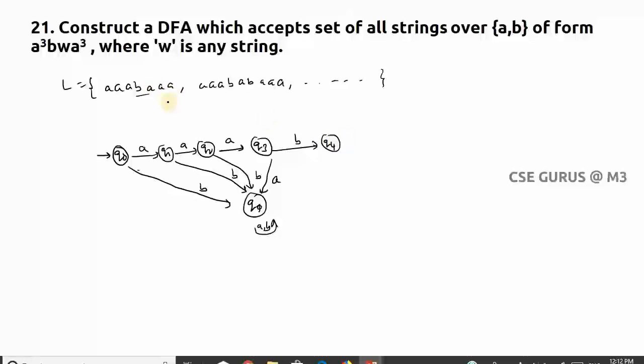From q4, I can have anything—any string. Let us suppose if it is epsilon, then I'll get only three a's. So first I'll write three a's. Now basically this is the requirement: if this is satisfied, it has to go to final state for this triple a followed by b and triple a.